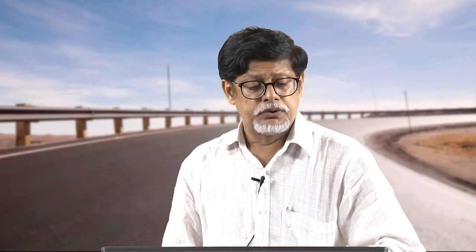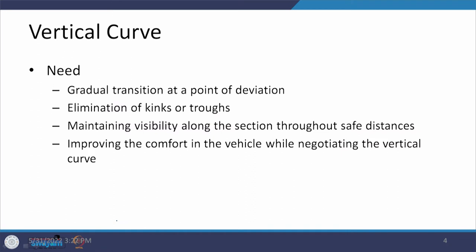Let us first talk about in general why these vertical curves are required and what are the general guidelines related to them. The very first need is the gradual transition at a point of deviation. You have provided grade line 1 and then there is grade line 2, and at this point there is going to be a changeover. This changeover has to be made in a smooth form, and that is what we do by providing a vertical curve.